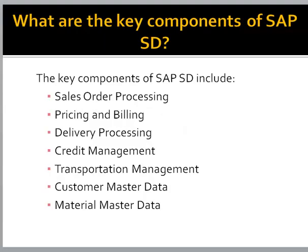What are the key components of SAP SD? The key components of SAP SD include Sales Order Processing, Pricing and Billing, Delivery Processing, Credit Management, Transportation Management, Customer Master Data, and Material Master Data.